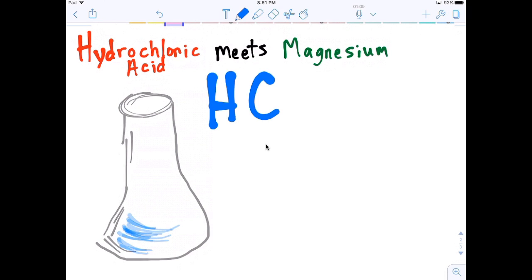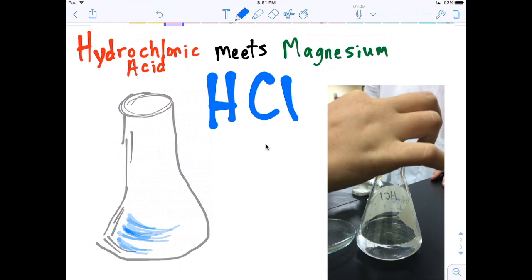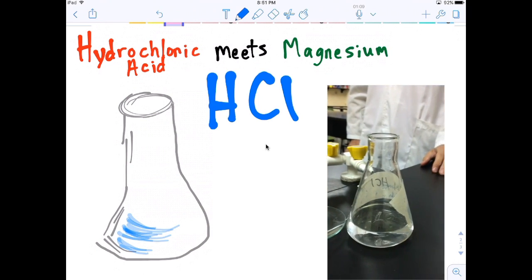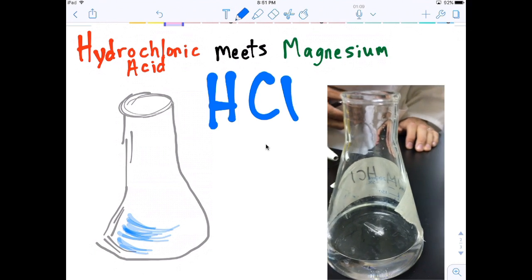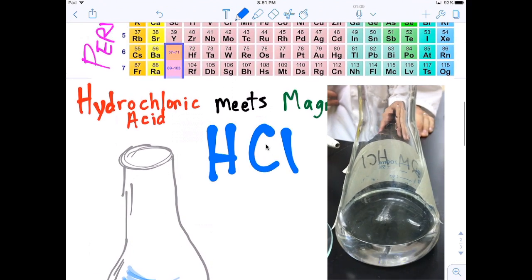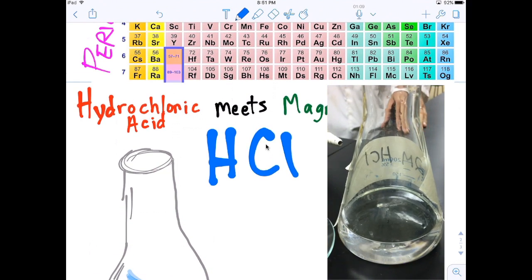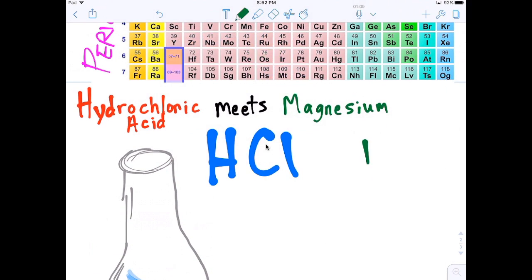Hydrochloric acid is made of two different atoms bonded together into hydrochloric acid, and magnesium is in its pure form all by itself. So that's Mg.